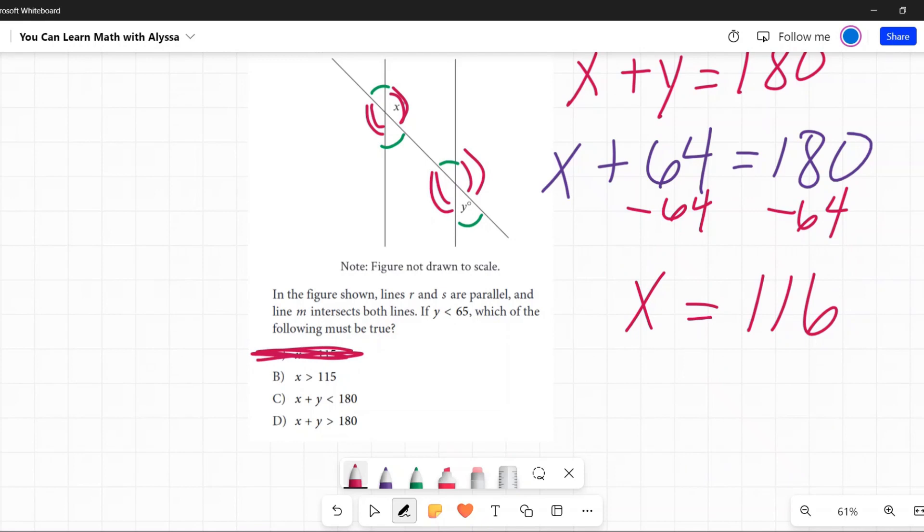Next one: x plus y is less than 180? No, we said x plus y equals 180. x plus y is greater than 180? Nope. B is the only one. We don't have to do any further work.